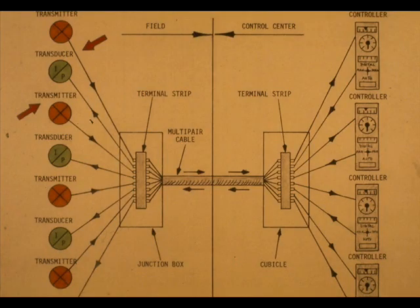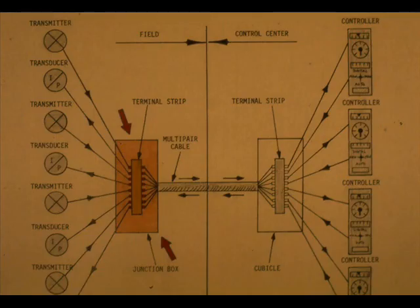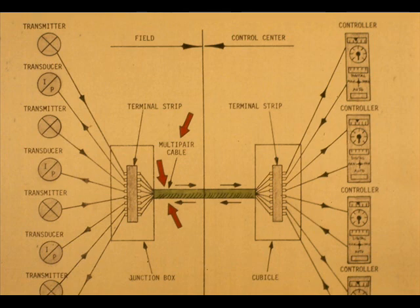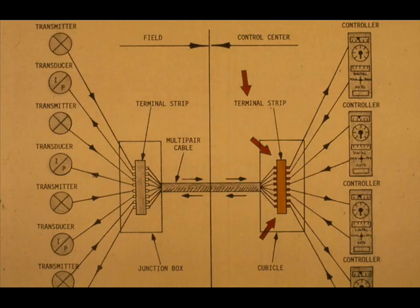This schematic represents the circuits previously described. The field items are transmitters, transducers, and the junction box. The signal wires are connected to a multi-pair cable through a terminal strip in the field junction box. The multi-pair cable terminates at a terminal strip that is located inside a control center cubicle.